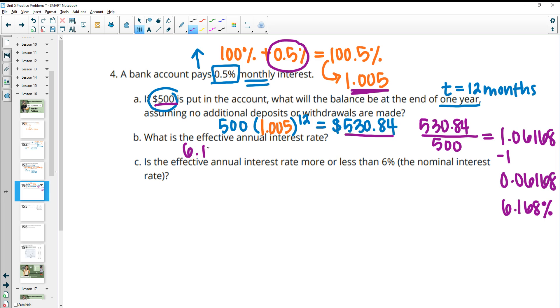So that's one way to do it. You can take the new total at the end of a year divided by the original, subtract off your 100%, write it as a percent. The other way you can do that is just by taking your growth factor to the 12th power. And that would just give you that 1.06168 as well. And then subtract off your 100% and get that 6.17% also. So is the effective annual interest rate more or less than 6%? So it's more.